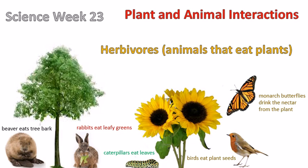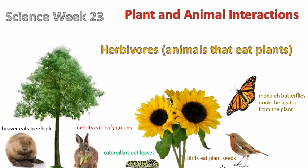Here's a caterpillar. He likes to eat the leaves from the host plant, and in this case the sunflower is the plant that the caterpillar is going to eat from. The caterpillar is going to grow into becoming a beautiful butterfly, and butterflies drink the nectar from the plant. The nectar is found in this area of the plant. Then birds eat the seeds that fall from the plants.